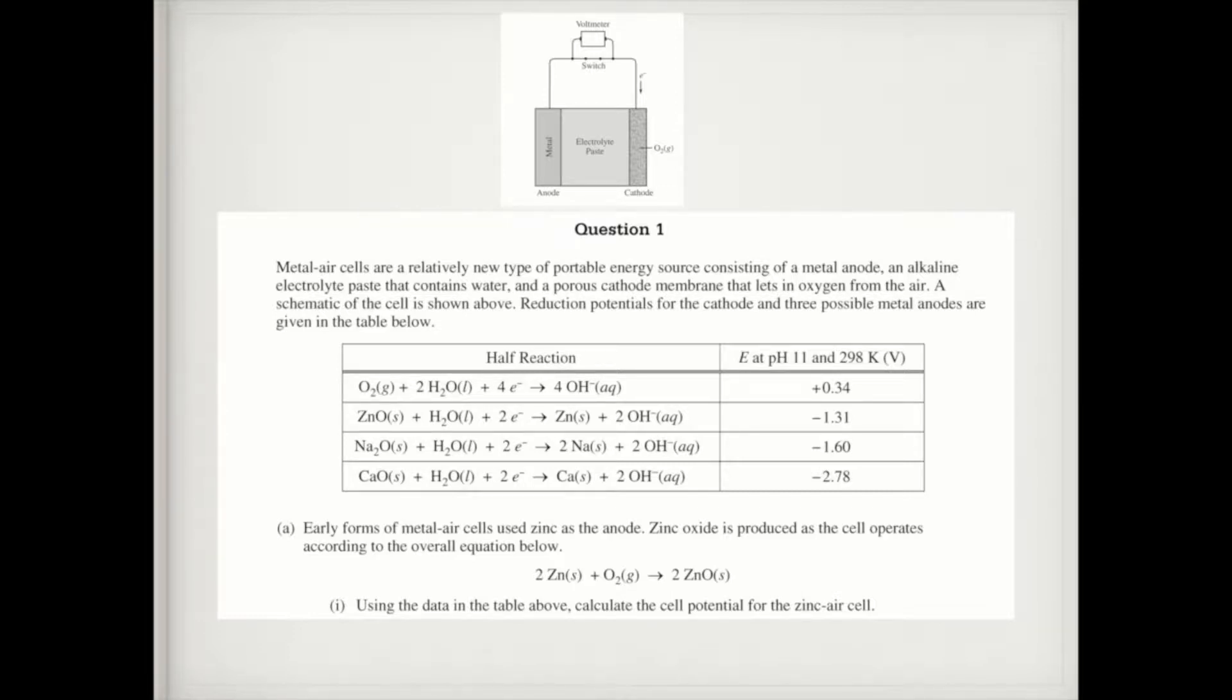It says metal air cells are a relatively new type of portable energy source consisting of a metal anode, an alkaline electrolyte paste that contains water, and a porous cathode membrane that lets in oxygen from the air. A schematic of the cell is shown above. Reduction potentials for the cathode and three possible metal anodes are given in the table below.